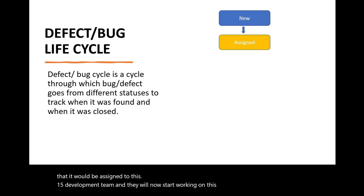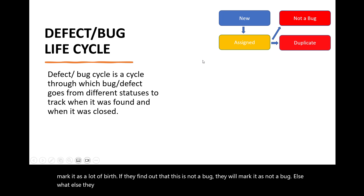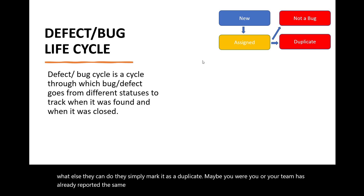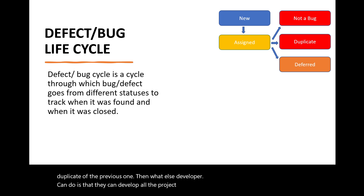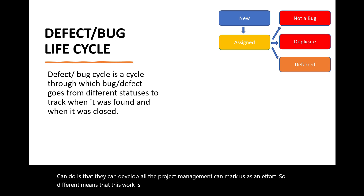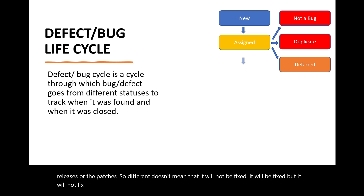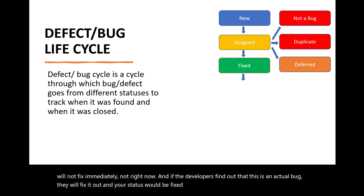Once assigned, the development team starts working on the bug. They may mark it as 'not a bug' if they find it isn't actually a bug. They may also mark it as 'duplicate' if the same bug was already reported previously. Another option is 'deferred' — meaning this is not a priority and may be fixed in upcoming releases or patches. Deferred doesn't mean it won't be fixed; it just won't be fixed immediately. If developers confirm it's an actual bug, they fix it and mark the status as 'fixed'.